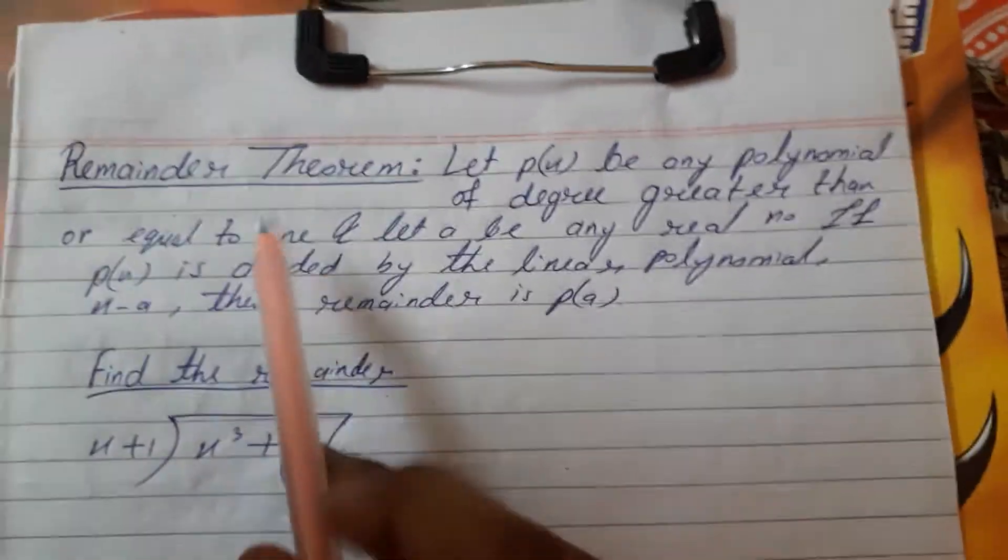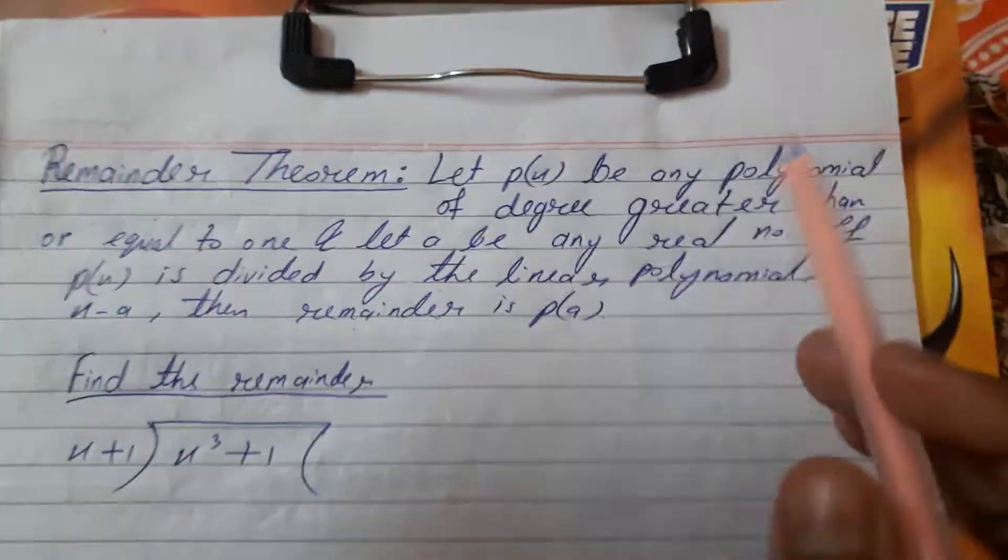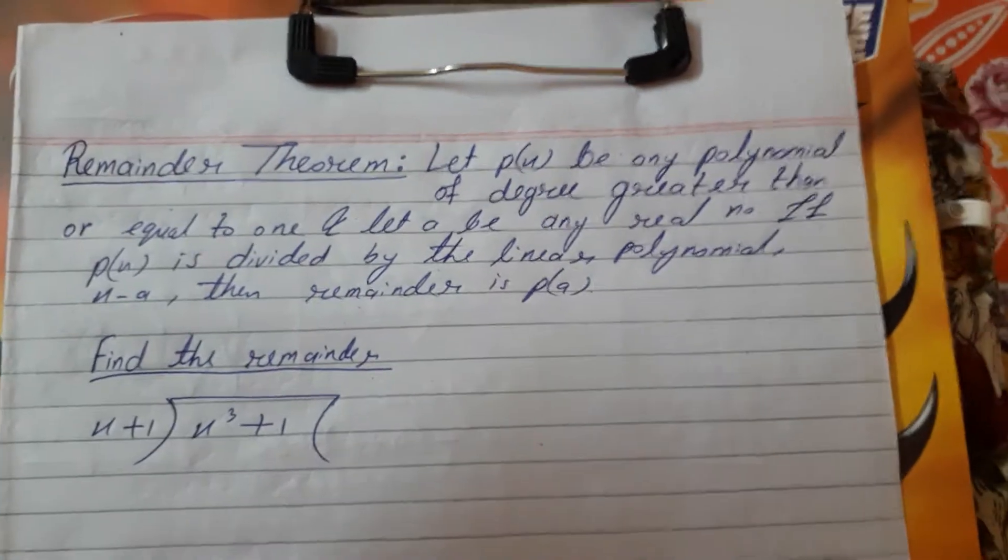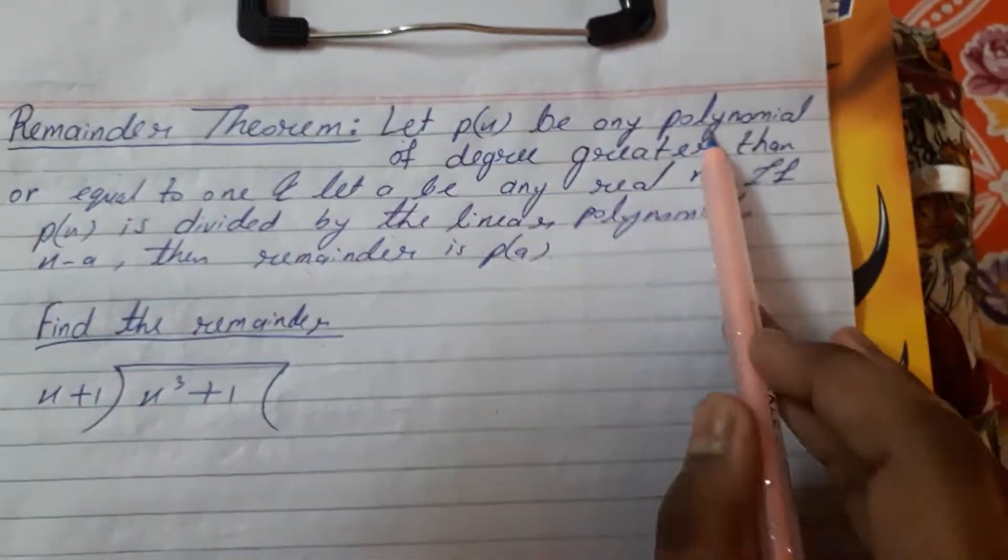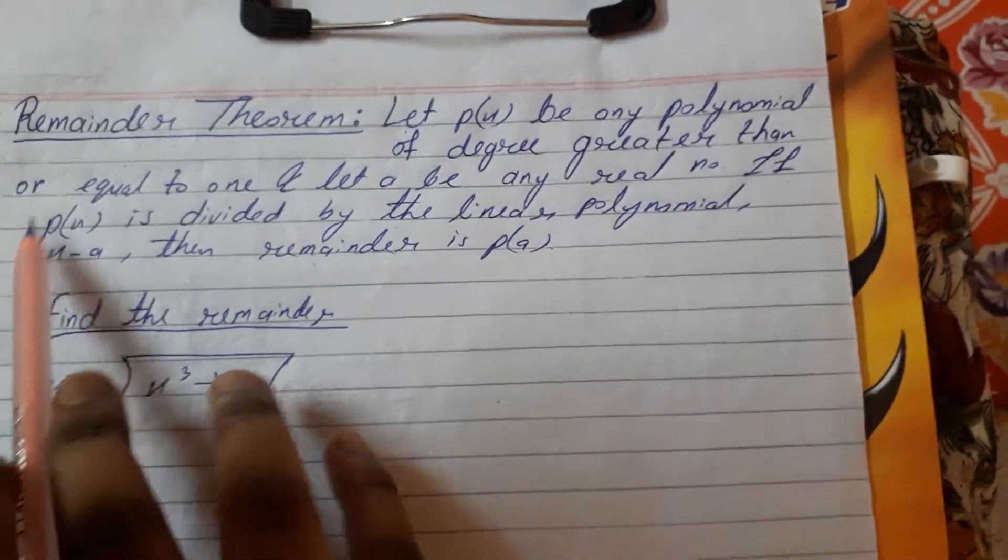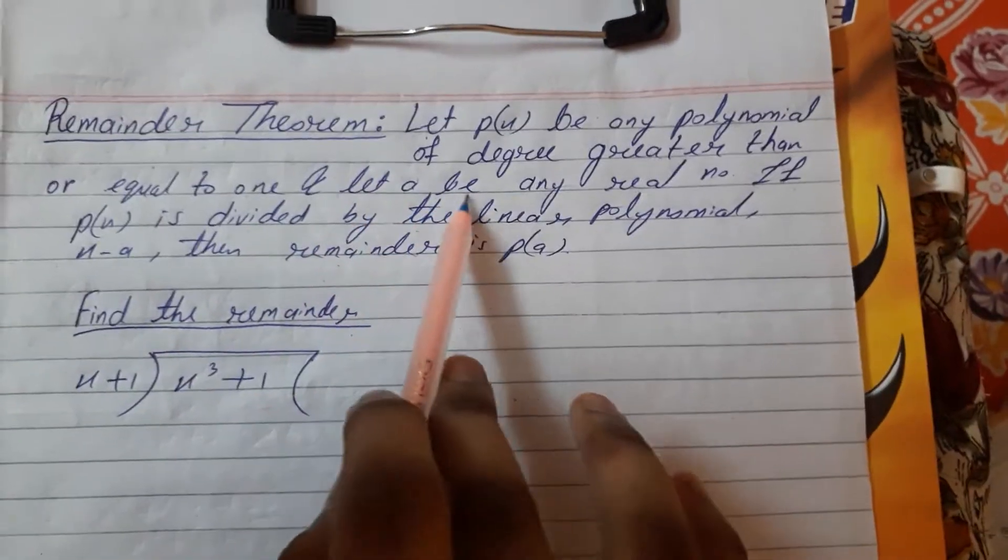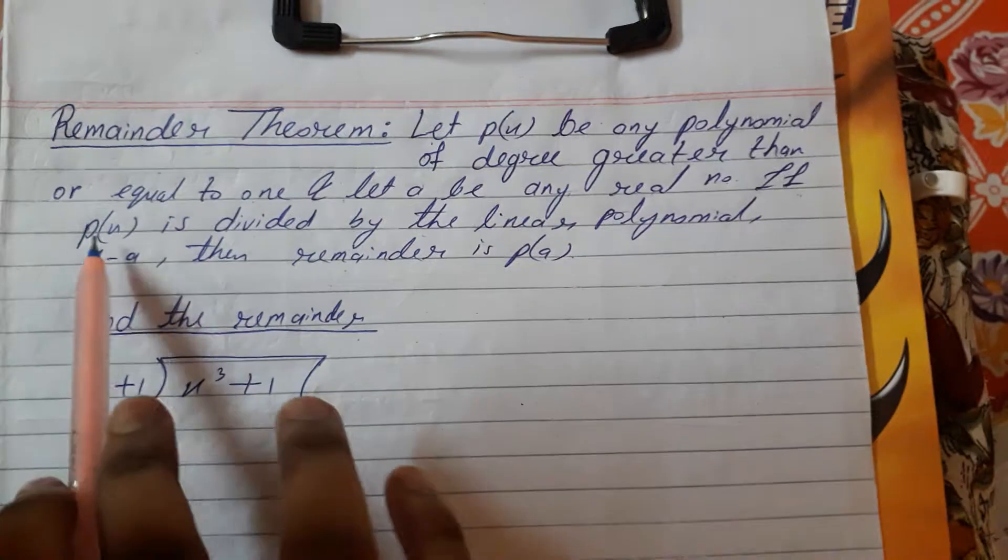Okay students, now I am starting the Remainder Theorem. See, what do you mean by Remainder Theorem? Let p(x) be any polynomial of degree greater than or equal to 1, and let a be any real number. If p(x) is divided by the linear polynomial x minus a, then the remainder is p(a).